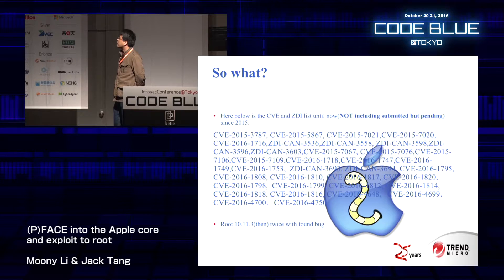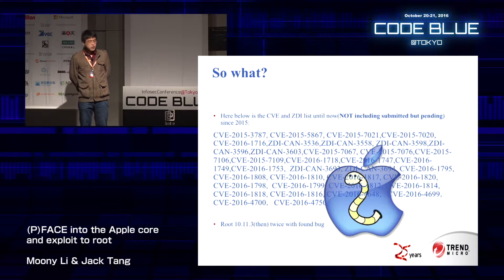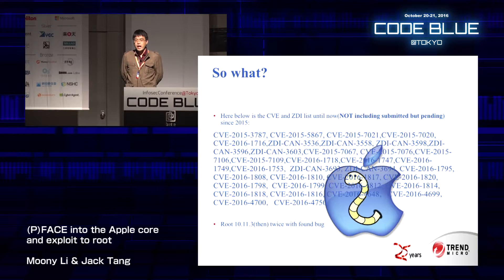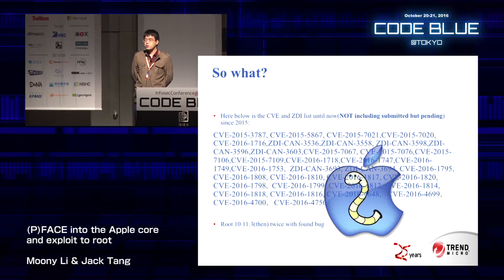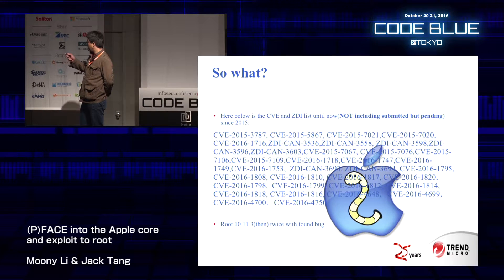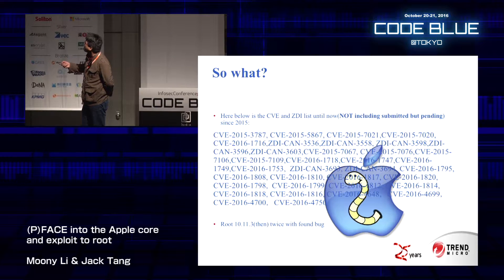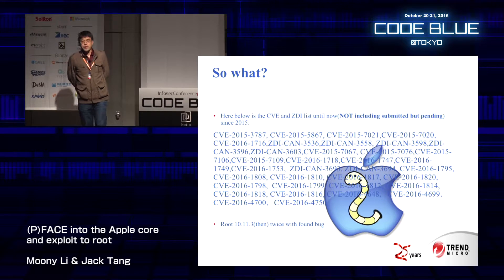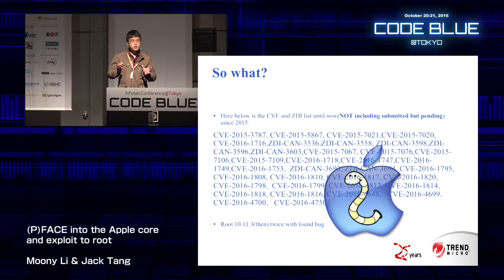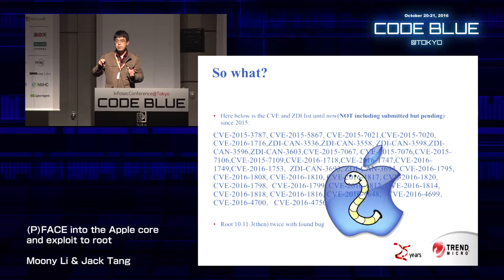So why are we here? Because of this. Here are the CVE lists for which we have been credited using our passive fuzzing framework. The CVEs are from the Apple vendor and some are from CDI. We have used several of these vulnerabilities to root OS X version 10.11.3.